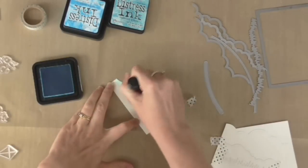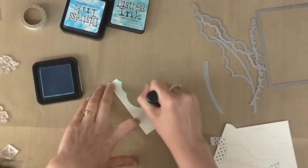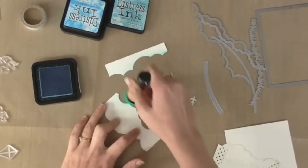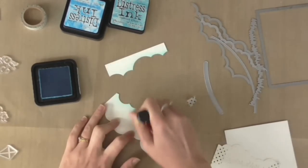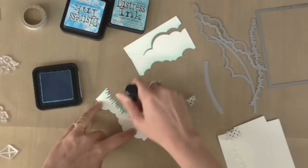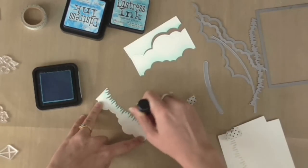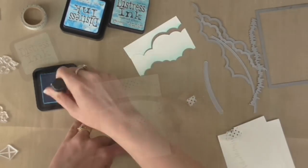I want to add some color to this card so I'm using my ink blending tool with some tumbled glass distress ink just to add some color to the bottom edge only of the top three of my jigsaw pieces. So I'll do this one which is clouds going into the grass as well. Add a little color to that